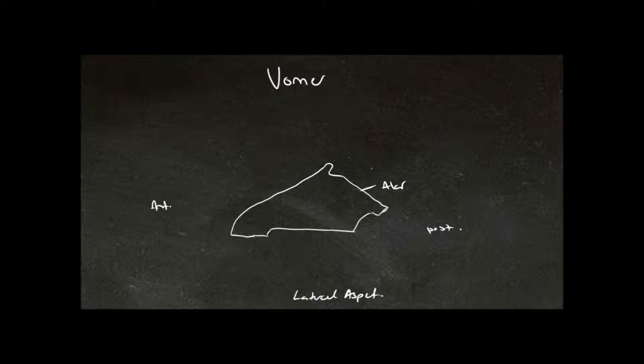Now we need to know which is superior and which is inferior, and the way in which we know that is by the alar again. The alar are more superior, and here this flat part of the bone is what is referred to as the perpendicular portion of the vomer.